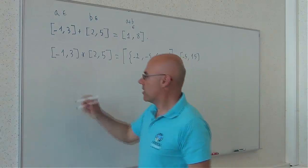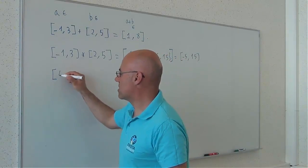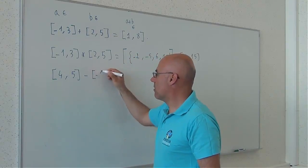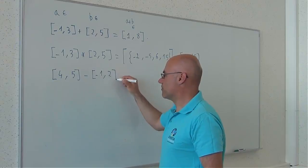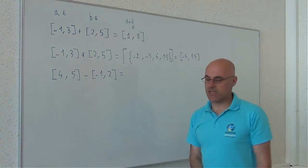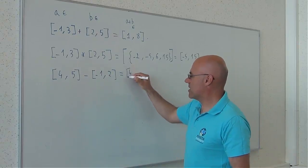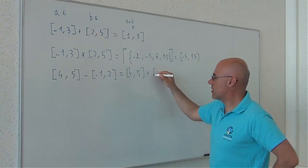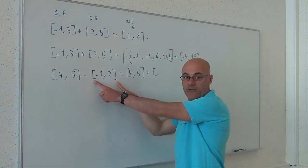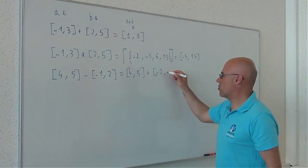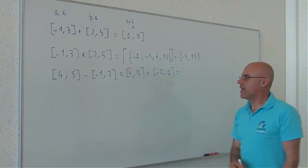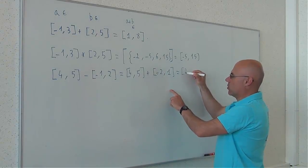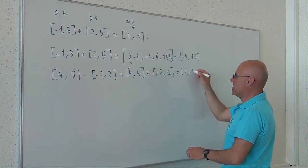Now, I will consider the subtraction. Consider, for instance, 4, 5 minus, let's say, minus 1, 2. How can I compute this one? I just write that it corresponds to 4, 5 plus the opposite of this interval which is minus 2, 1. And I apply the addition rule. It means 2 and 6.